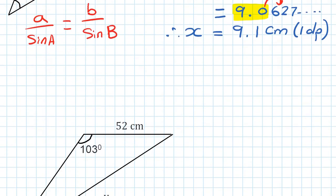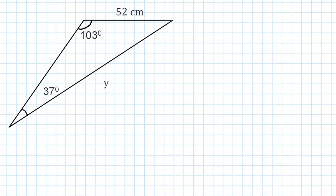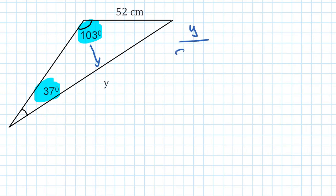Next question. You know that opposite of y is 103 degrees, and the angle opposite of 52 is 37 degrees. Two angles are given, so we use the sine rule. Opposite of y is 103 degrees, so we write: y over sine of 103 degrees is the same as 52 over sine of 37 degrees.